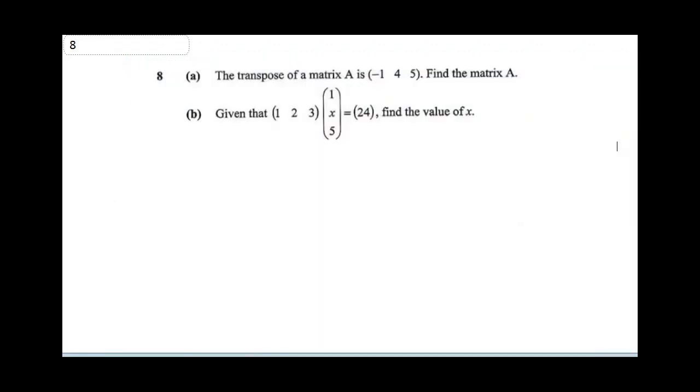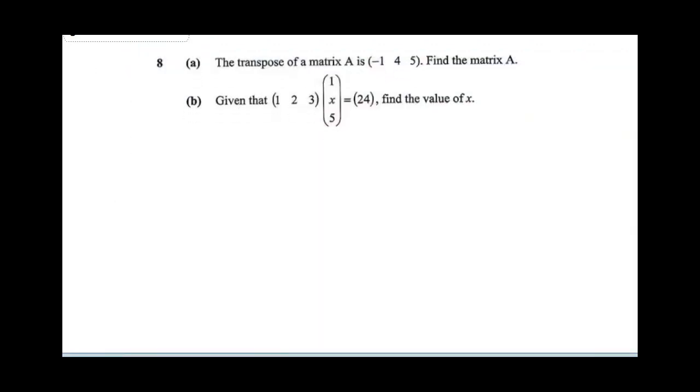Question 8 says the transpose of a matrix A is minus 1, 4, 5. If the transpose is minus 1, 4, 5, find A. If A transpose is equal to minus 1, 4, 5, therefore A will be just invert the matrix. Let the rows become a column and the column become a row. It's going to be minus 1, 4, and 5. So this is A.